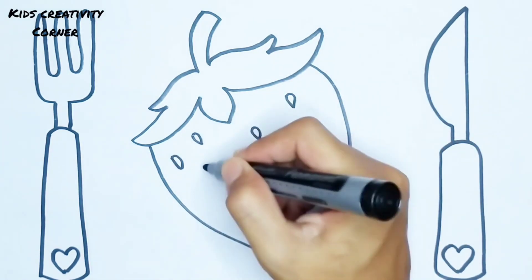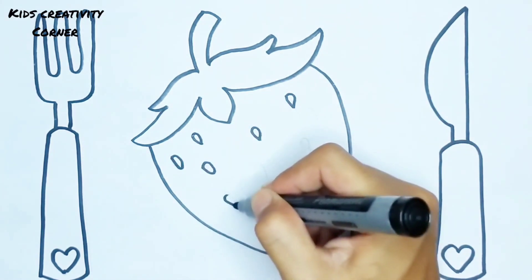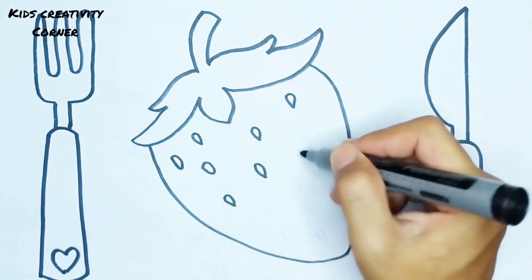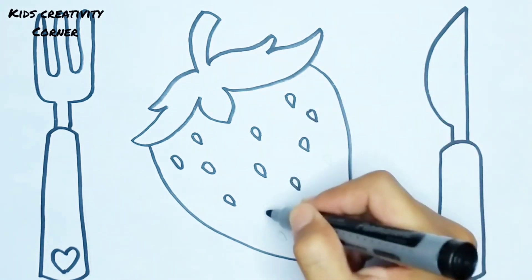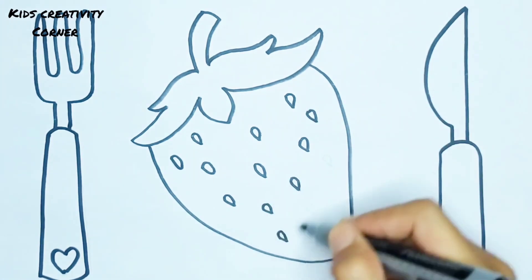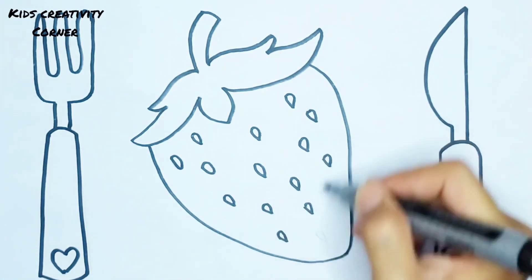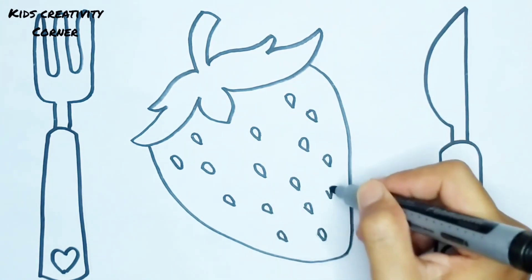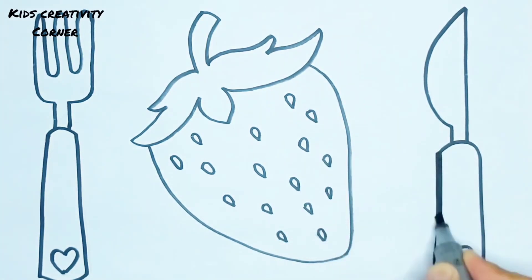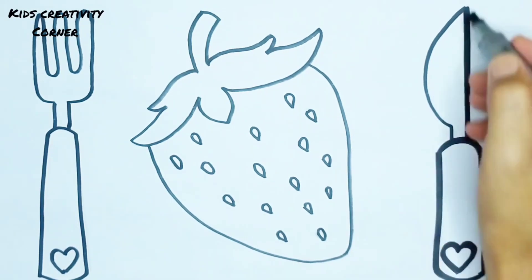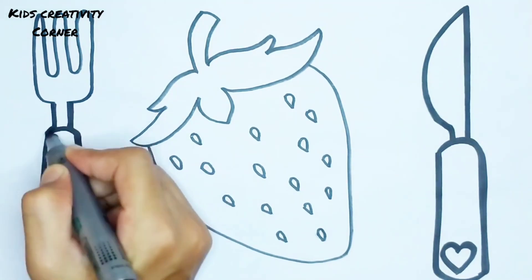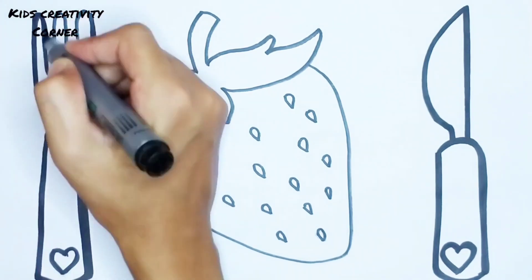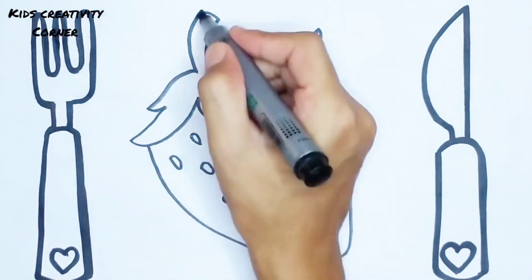Old MacDonald had a bomb, E-I-E-I-O. And on his phone he had some sheaves, E-I-E-I-O. With a ba-ba here and a ba-ba there, here a ba, there a ba, everywhere a ba-ba. Old MacDonald had a bomb, E-I-E-I-O.